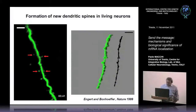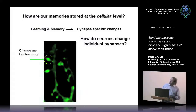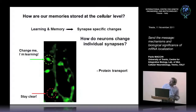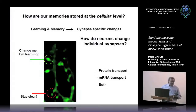This raises another interesting question: how do neurons change individual synapses? How is a neuron able to modify an activated synapse while keeping a non-activated synapse unchanged? One possibility is selective transport of proteins to that area; another is mRNA transport; or you can have both.